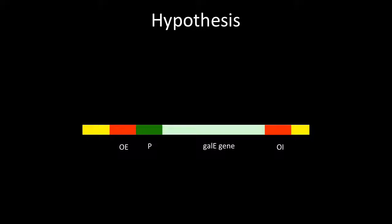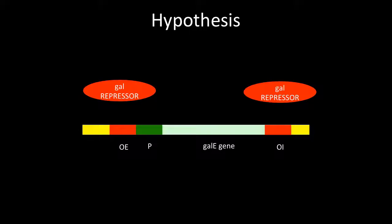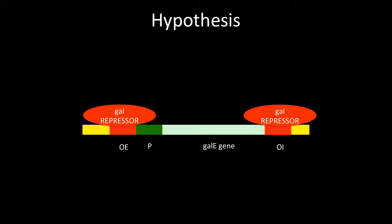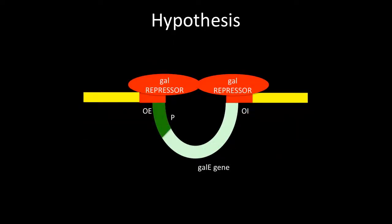They proposed that the gal operon stops transcription by looping the DNA between the two operons. Their theory was that two repressor proteins would bind to the two operator sites like this, then bind to each other like this, folding the DNA like this and preventing transcription. They wanted to test this mechanism, but didn't yet understand the gal operon well enough to test it directly. Instead, they decided to use an artificial lambda operator repressor system that was much better characterized.